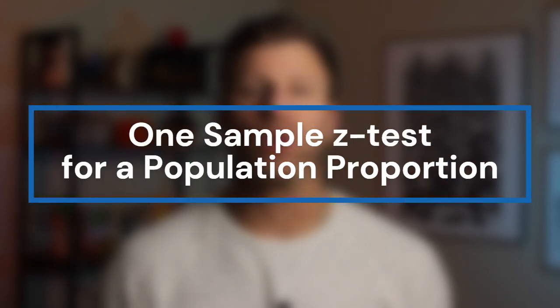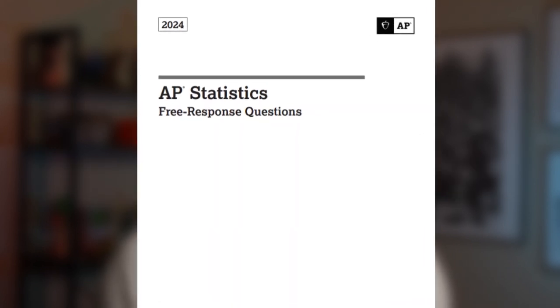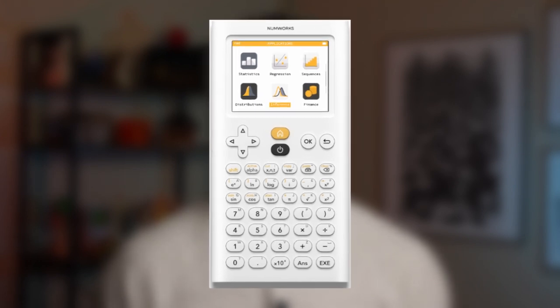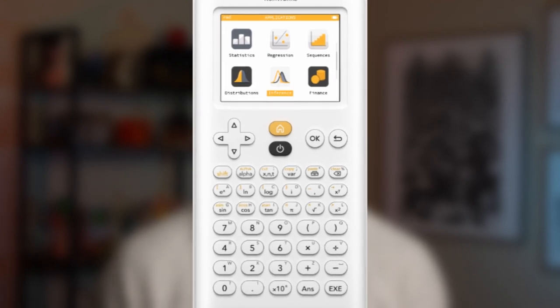I'm going to present to you a problem, we're going to pretend that this problem is on the free response section of the AP statistics exam. We're going to go through all of the different sections and parts that you need to get full credit on this question if it was on the AP exam. But what I'm actually going to show you how to do is how to use your NumWorks calculator to do all of the hard work for you, that way you can move through the problem faster and more accurately.